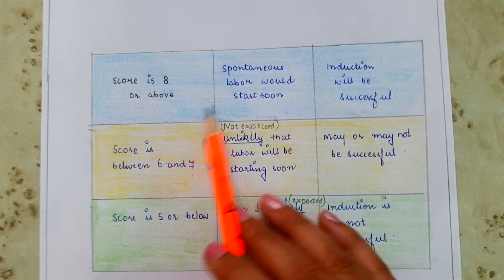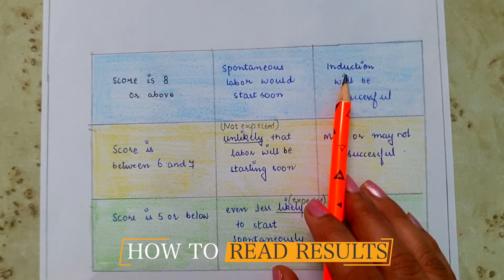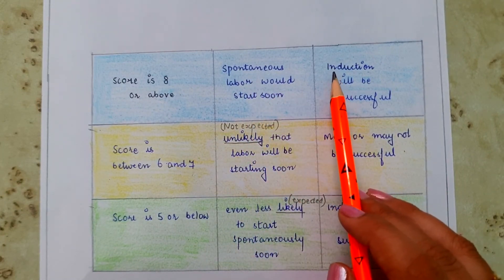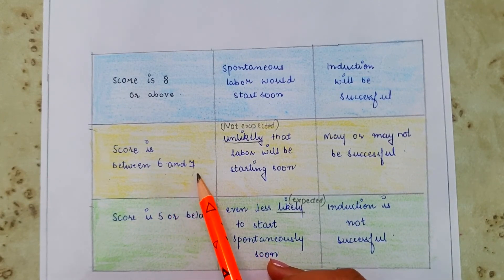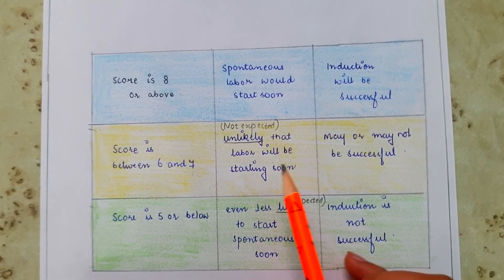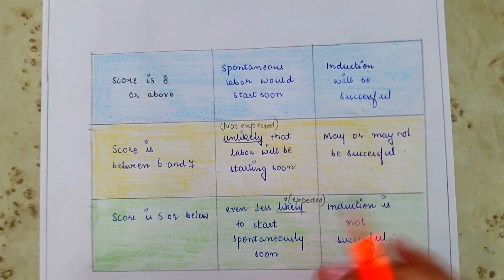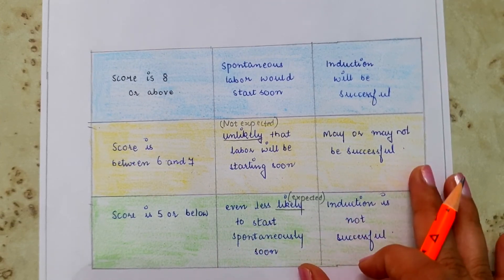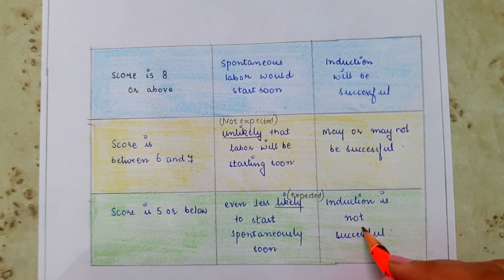A score of 8 or above means spontaneous labor will likely start soon, and induction of labor will be successful. A score between 6 and 7 means labor is not expected to start soon, and induction may or may not be successful — roughly 50/50 chances. A score of 5 or below is unfavorable: labor is very unlikely to start spontaneously, and induction will likely not be successful.